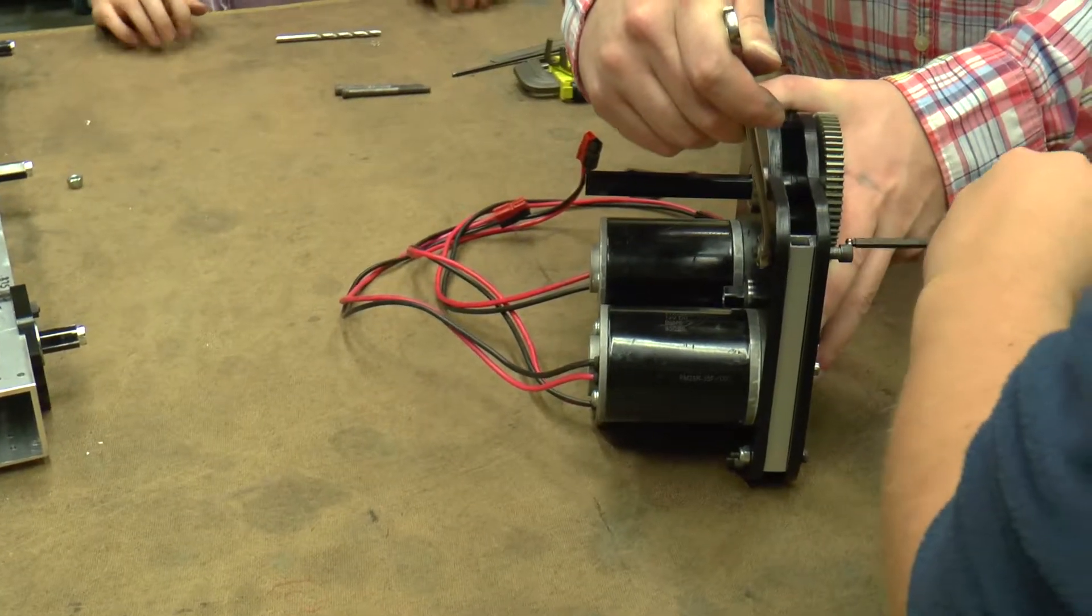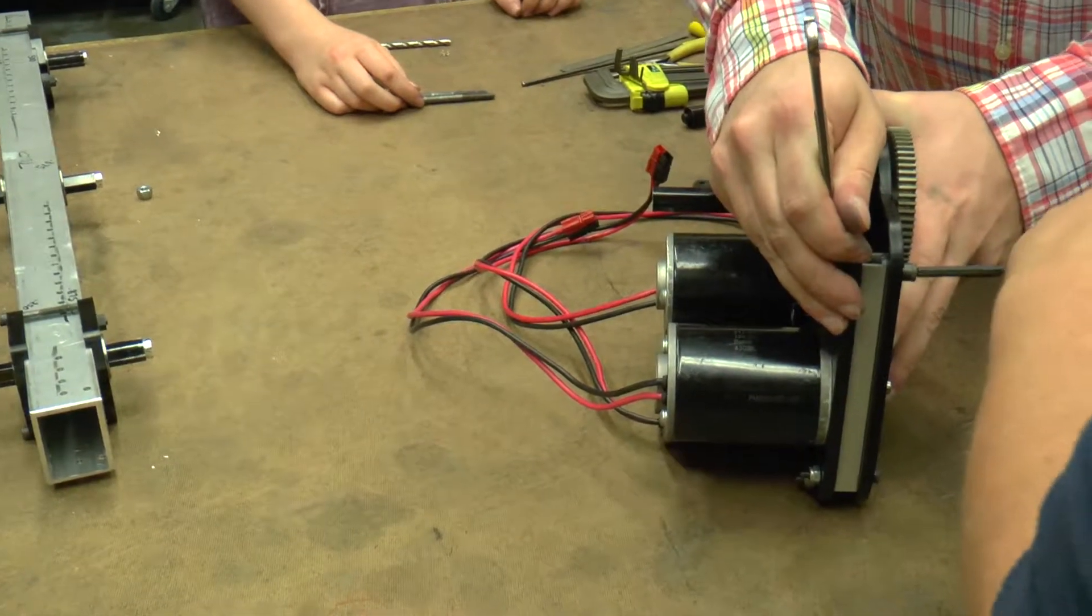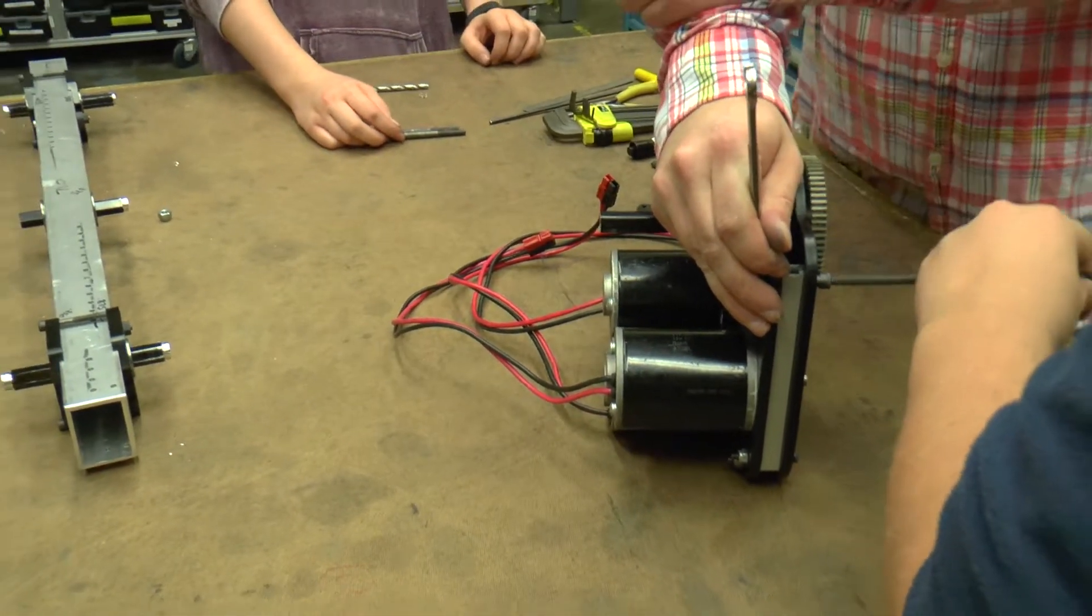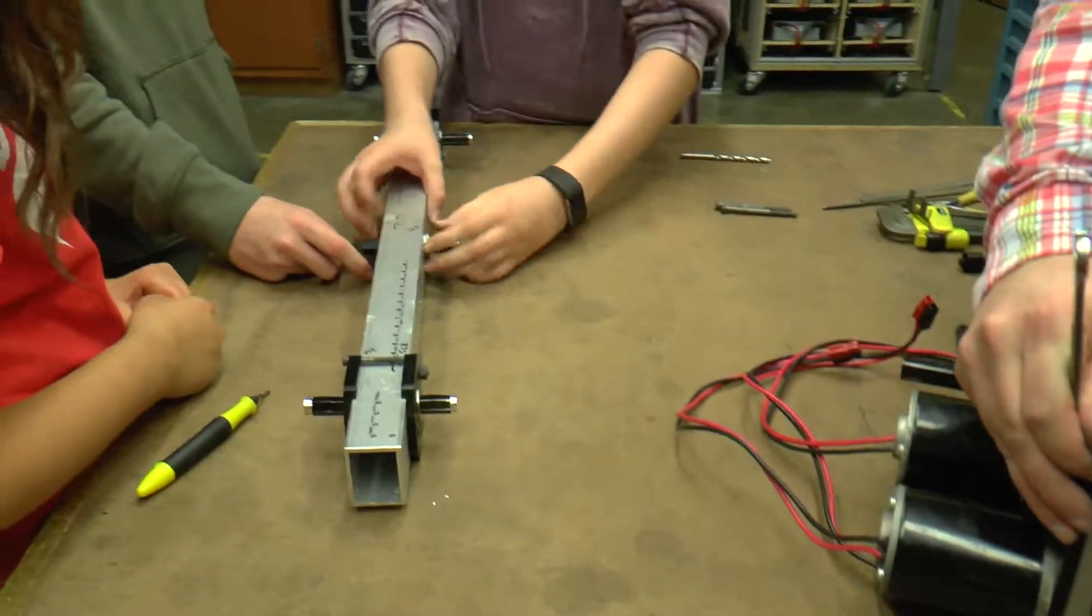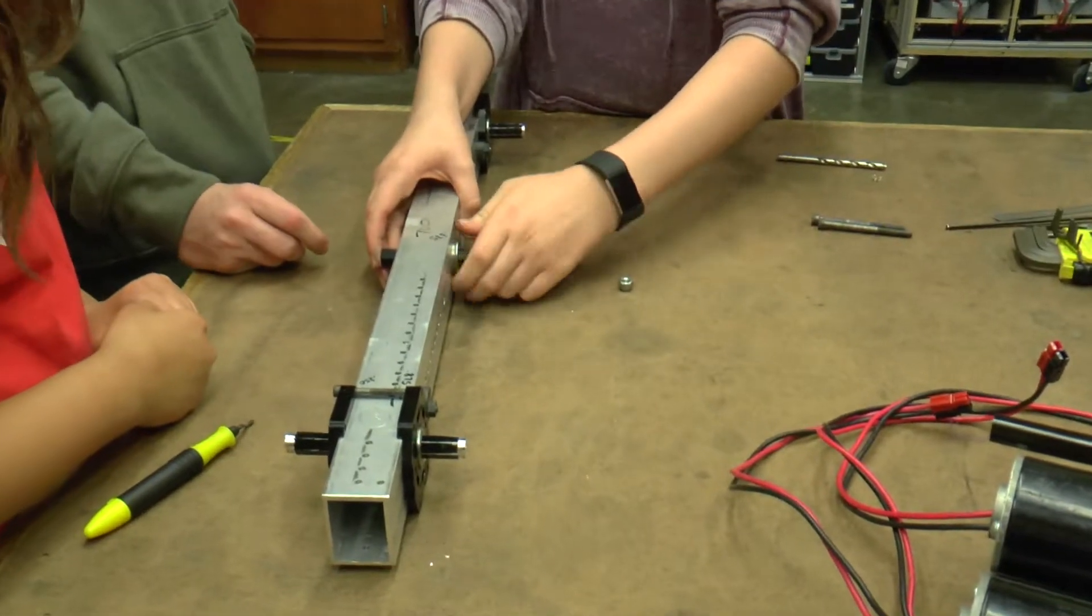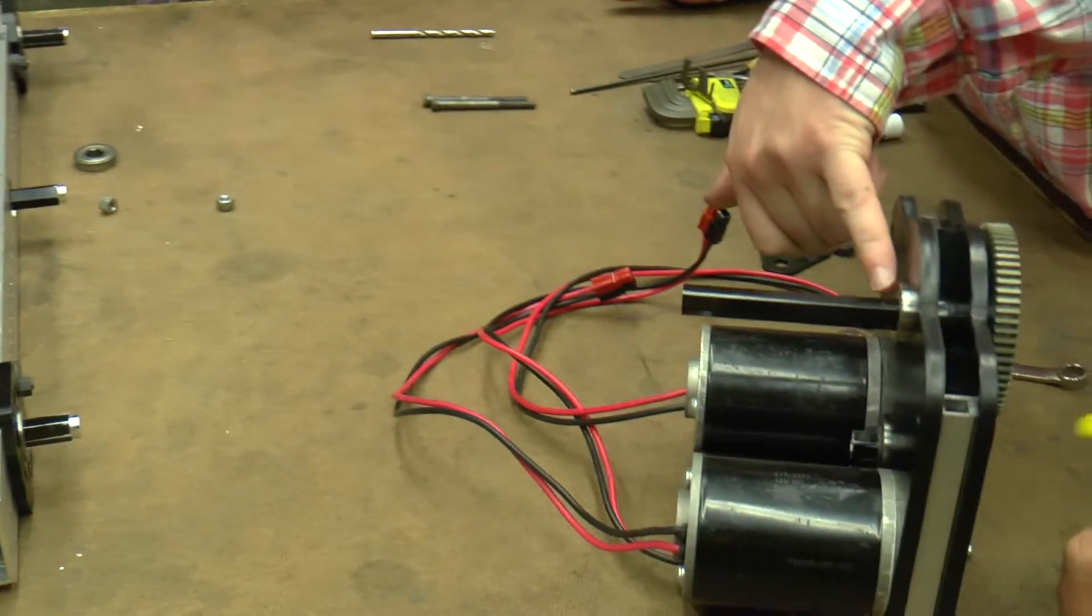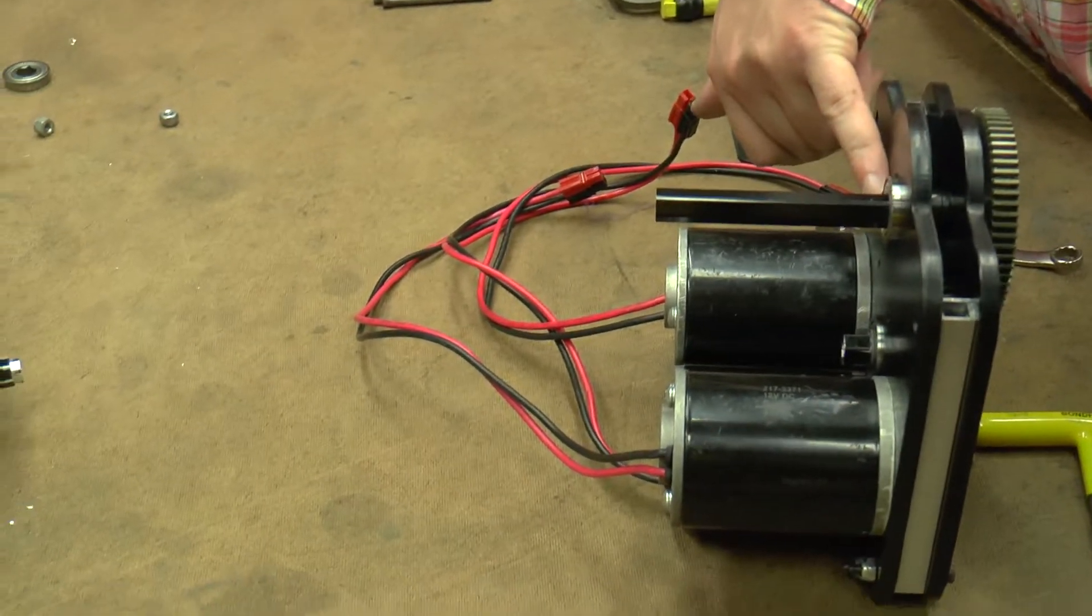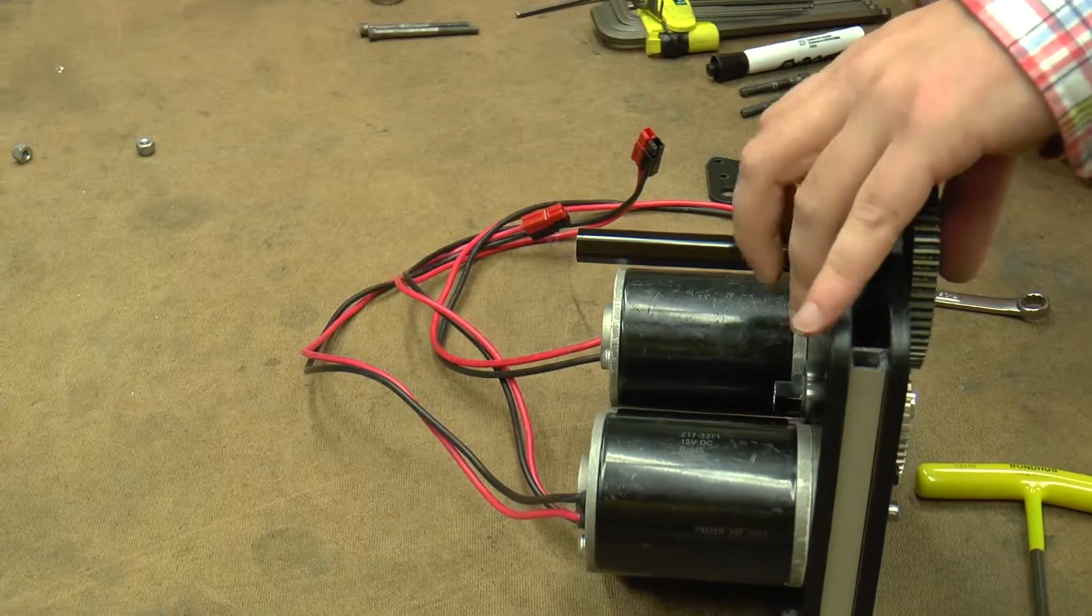If you're done with that, the next super exciting thing is we need to remove the one bearing that is on the gearbox side, because this one's going to take its place. This one that we stuck out so it extends halfway out, that's going to take its place.